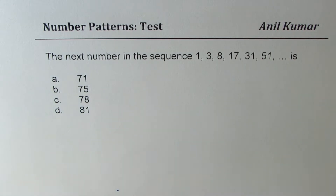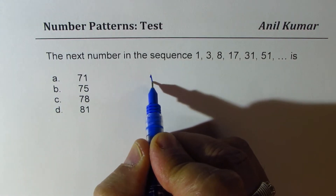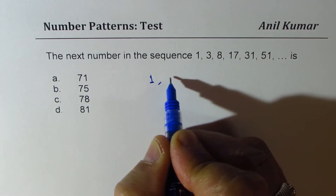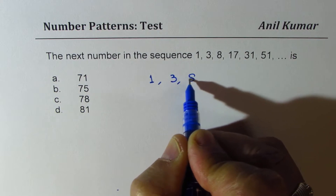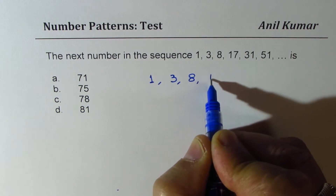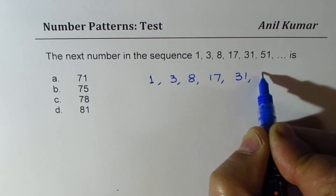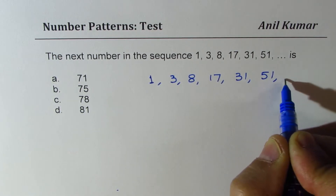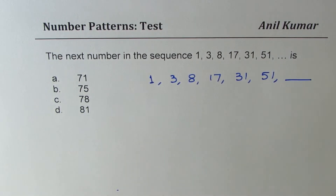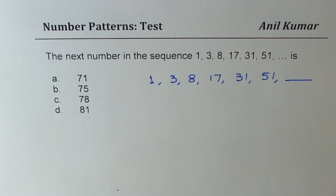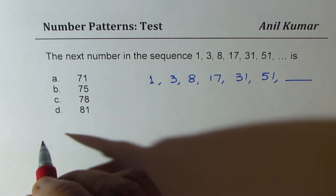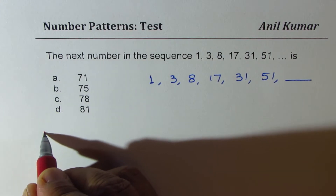The numbers given to us are 1, 3, 8, 17, 31, and 51. We need to find the next number. The strategy here is to find the common difference, which can give us some idea of the pattern.